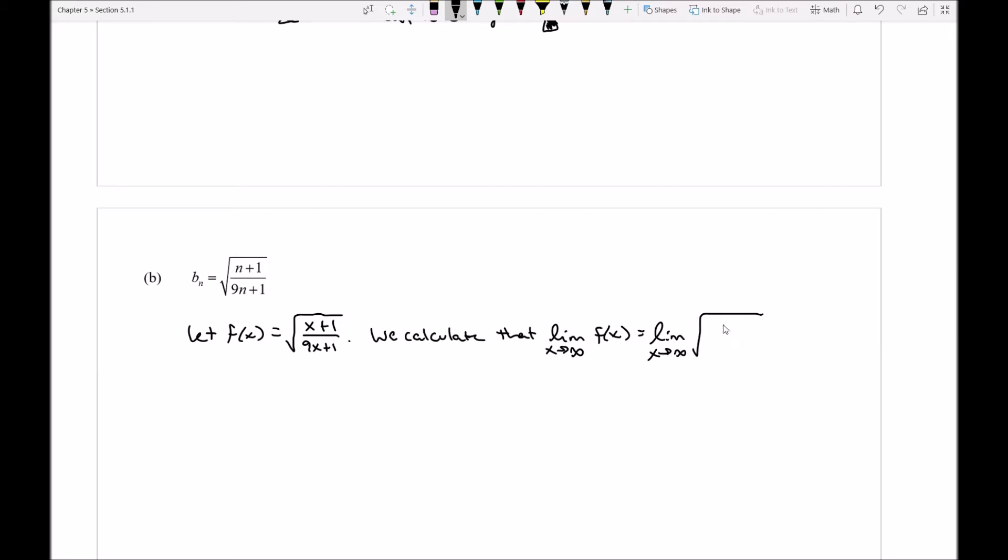So I'll state we calculate that the limit of f of x as x approaches infinity is the limit as x approaches infinity of our square root. And based on what we know about properties of limits dealing with continuous functions like a radical,